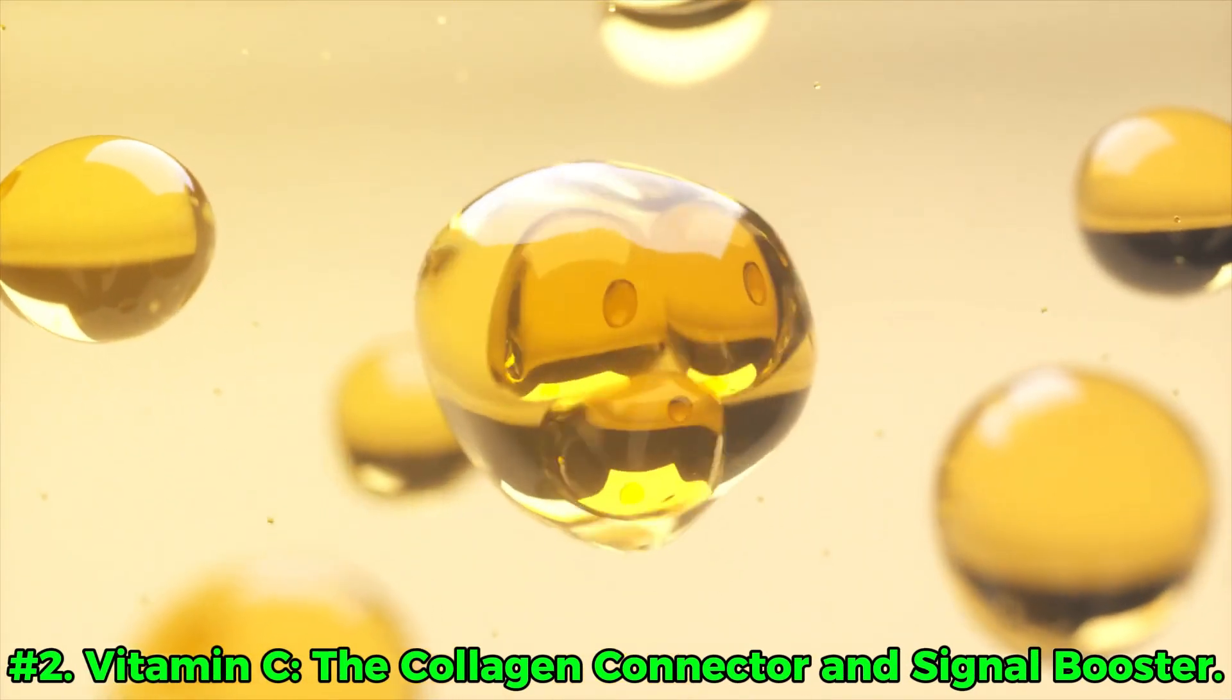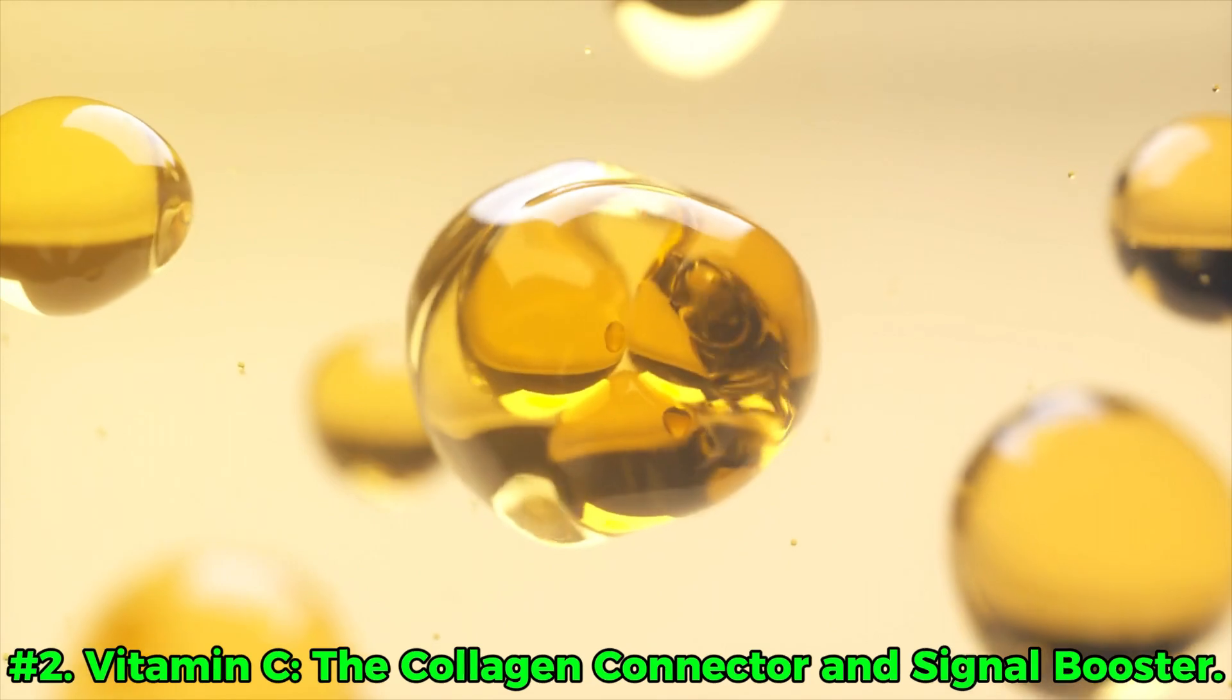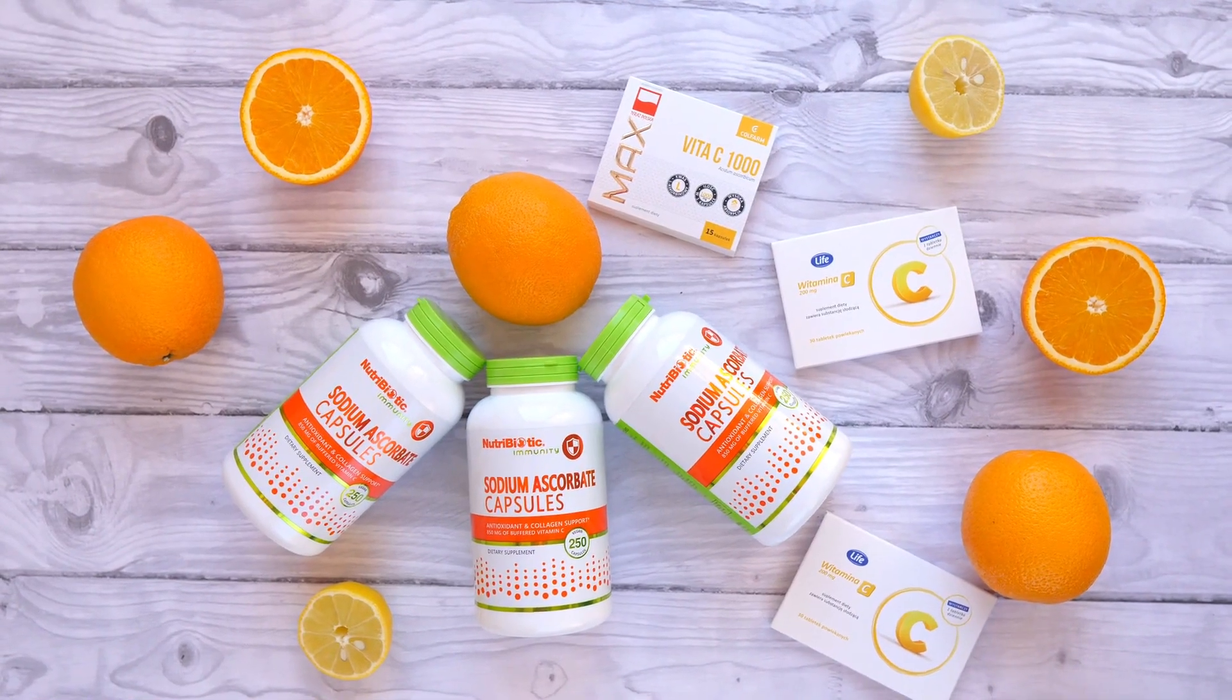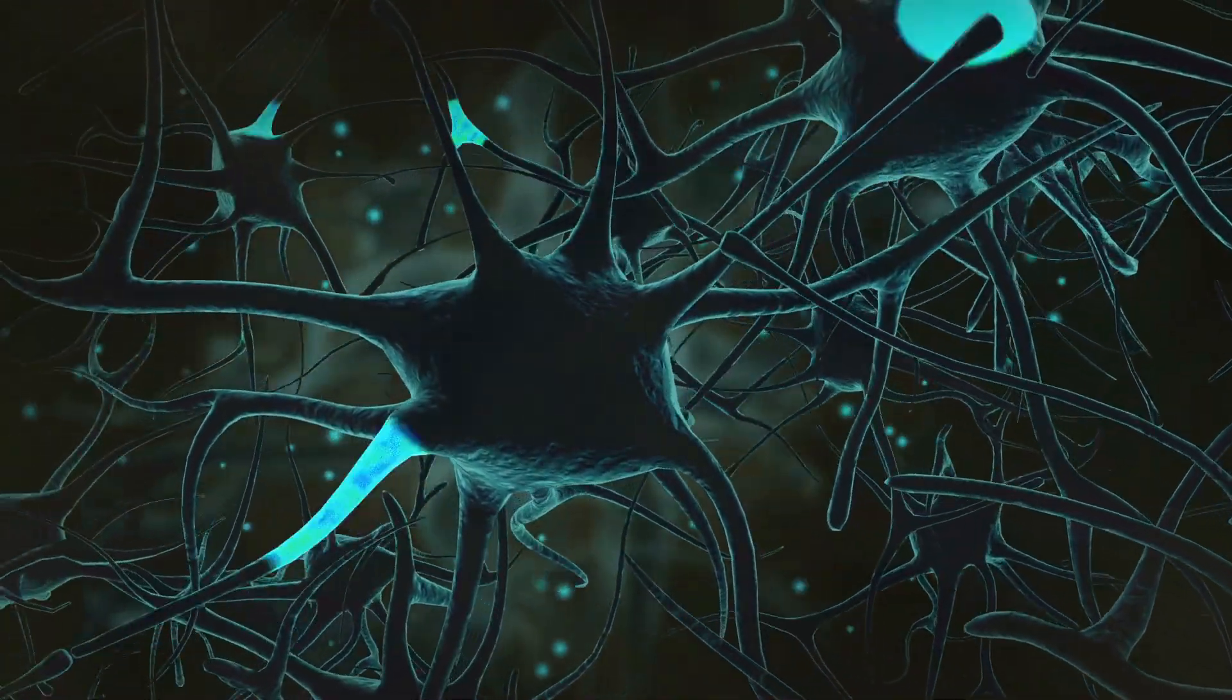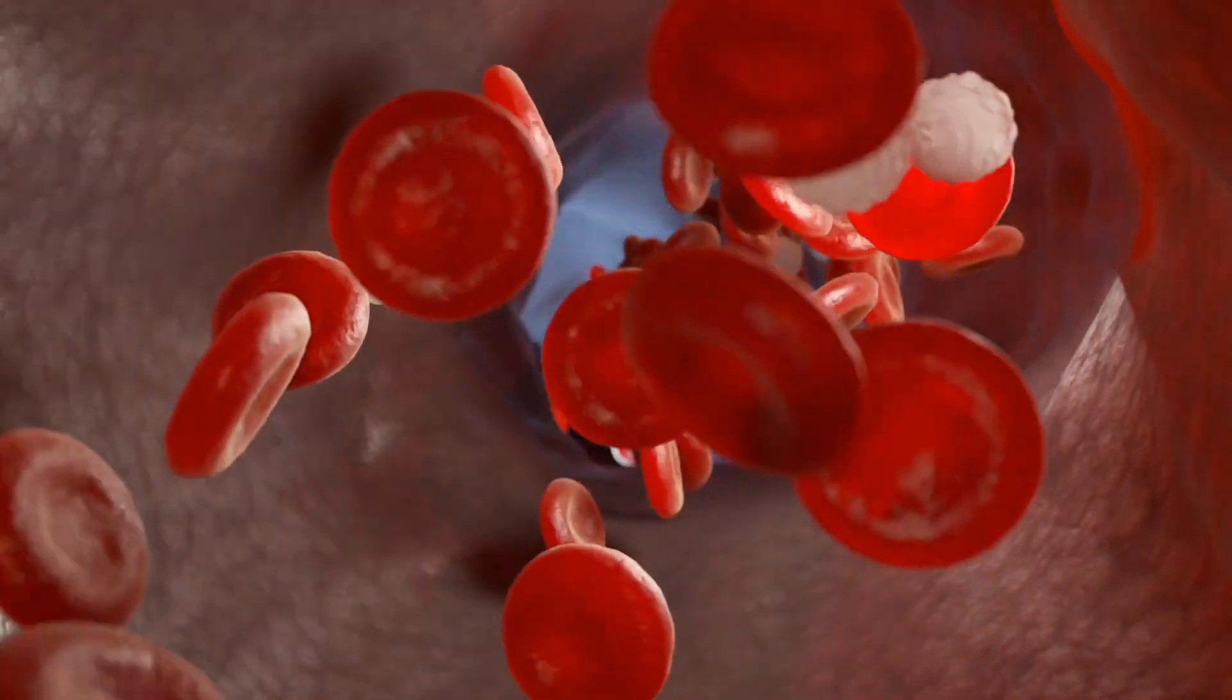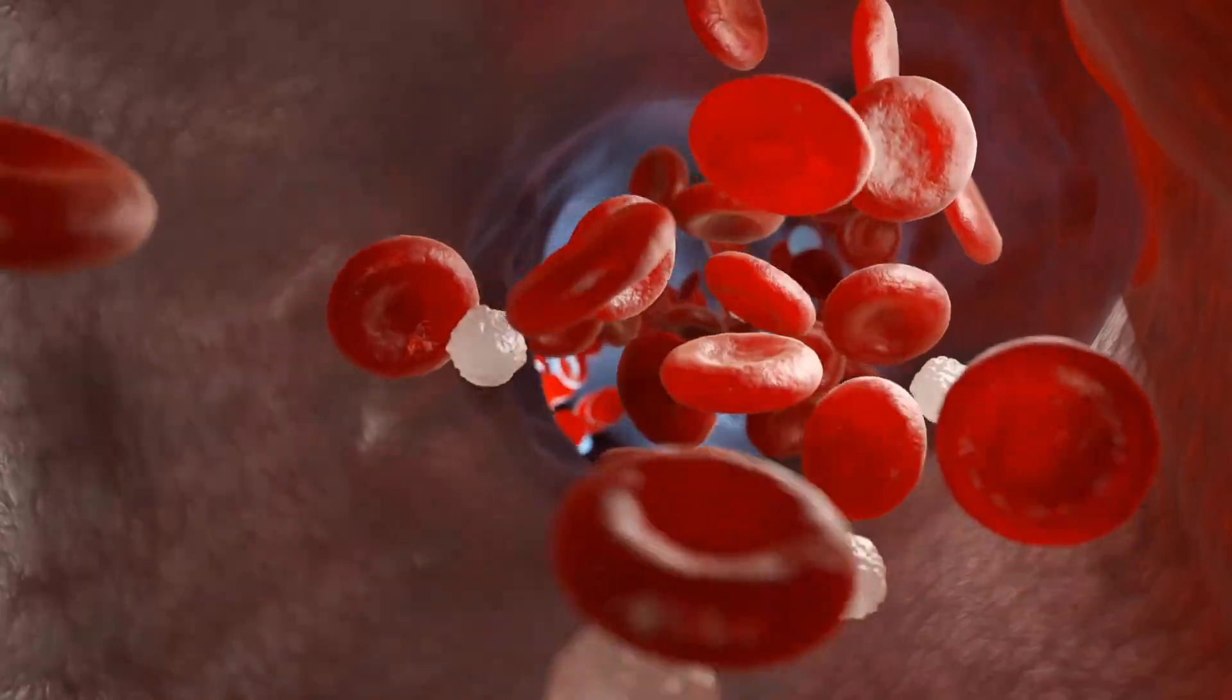Number 2: Vitamin C, the collagen connector and signal booster. Sure, vitamin C gets all the fame for its cold-fighting prowess, but did you know it's a VIP for your nerves too? This vitamin helps your body make collagen, a structural protein that supports blood vessels—the very highways that supply your nerves.